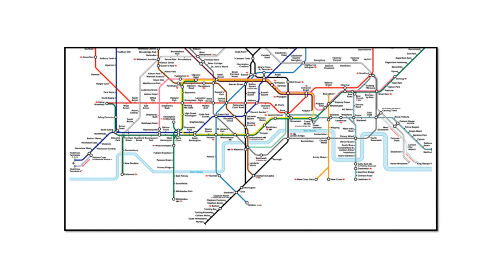All of these maps are accurate representations of London to one degree or another. However, only the satellite view is a true representation. Each of the others are abstractions — that is to say, they've had certain layers of detail removed and others added or highlighted. Without abstraction, it would become very difficult and very confusing to model and display certain different situations.